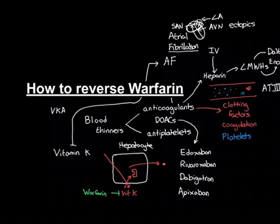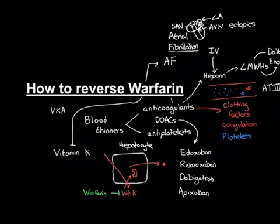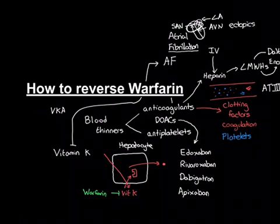The atrial wall muscles are just going to writhe around and not actually contract properly anymore, because the electrical activity has become utterly chaotic. All the different bits of muscle are contracting at different times, not synchronously with one another at all — it's a total mess. You don't really get that much blood ejected from the atrium to the ventricles anymore.